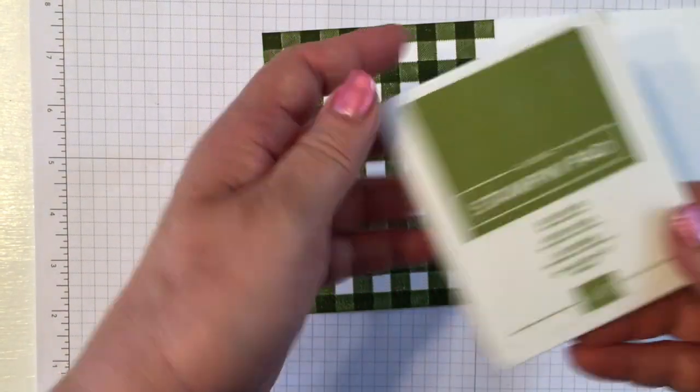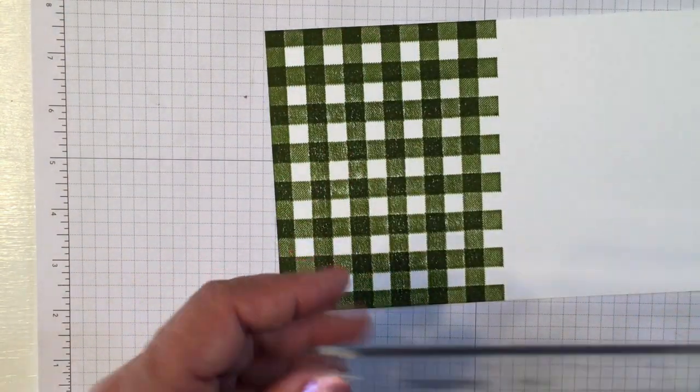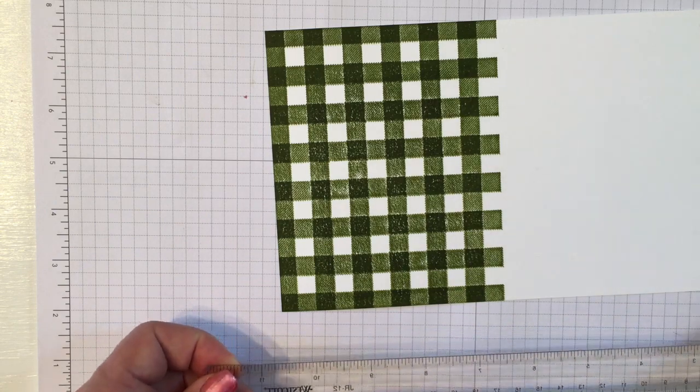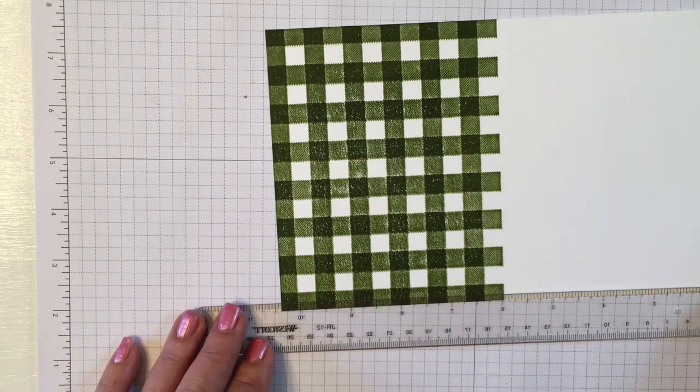Now I'm going to show you how to make it into a different check. You're going to need a straight edge or a ruler and some Stampin' Blends.